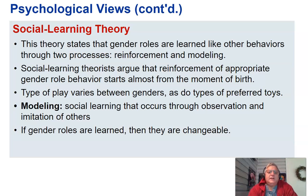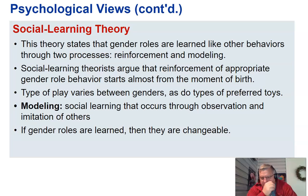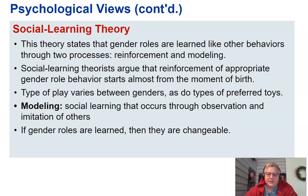Social learning theory states that gender roles are learned like other behaviors through two processes: reinforcement and modeling. Social learning theorists argue that reinforcement of appropriate gender role behavior starts almost from the moment of birth. Types of play vary between genders, as do types of preferred toys. Modeling is social learning that occurs through observation and imitation of others. If gender roles are learned, they are changeable.